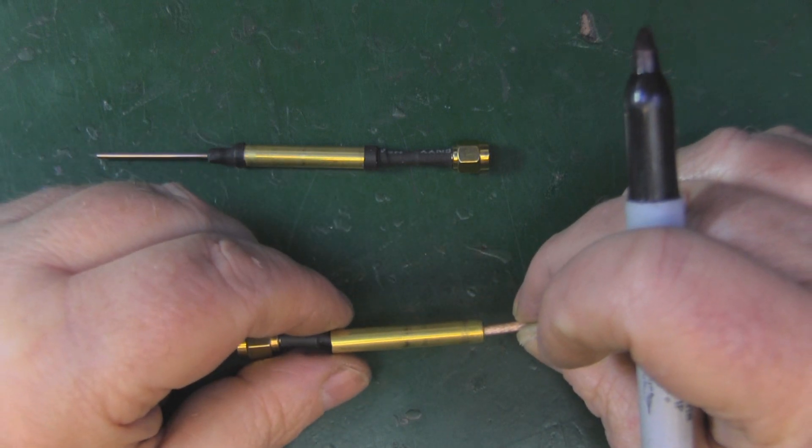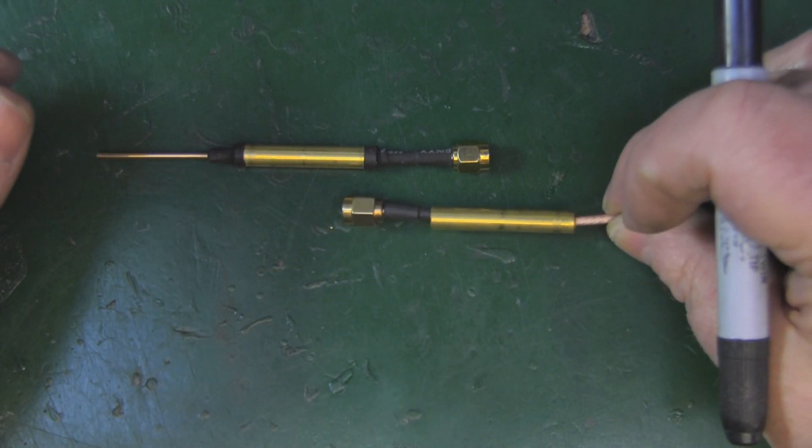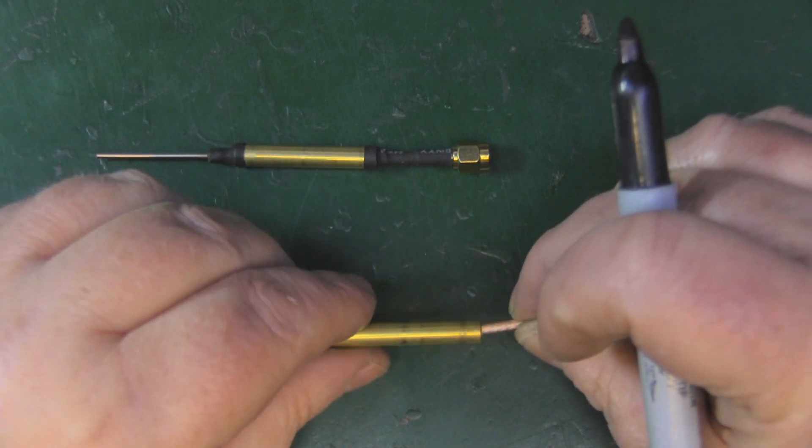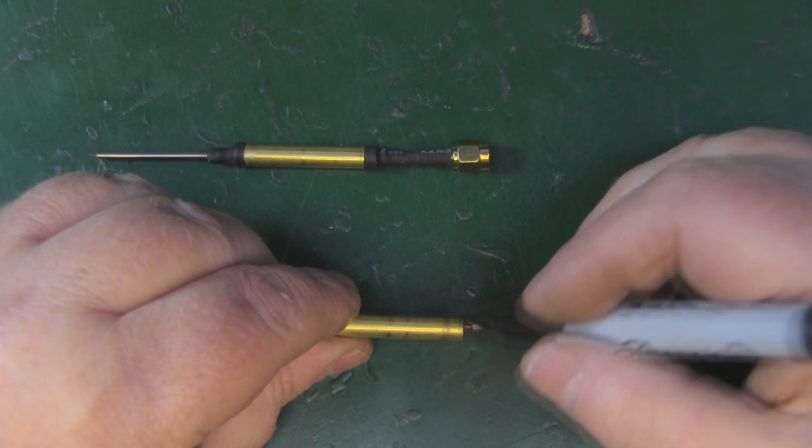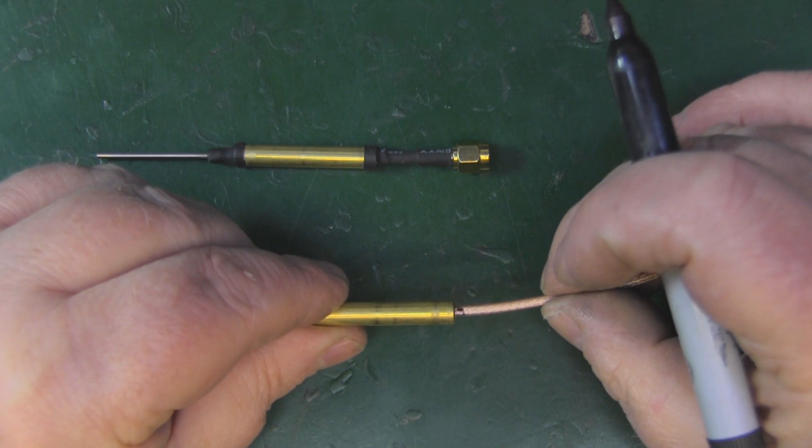I'm going to make this one a little bit shorter so I want it to sit probably about there. I'm just going to put a little mark on the coax and I'm going to trim it back just at that black mark.